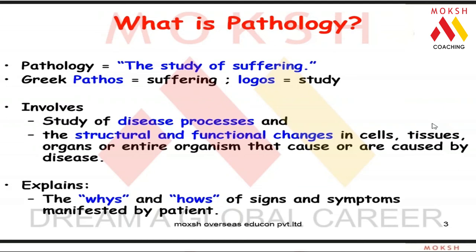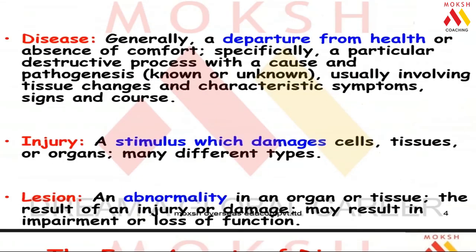The most important questions in medicine are: why did this happen to this patient, and how did it happen? All these answers come from pathology. Disease means a person who is not at ease with himself. Most diseases we know the cause of, but some we still do not — those are called idiopathic diseases. A lesion is any abnormality in the body which results in impairment or total loss of function.